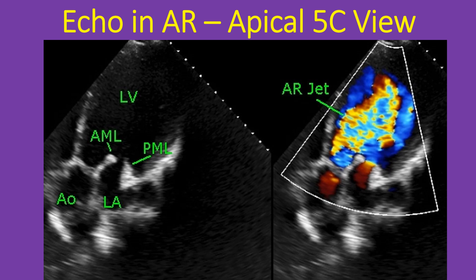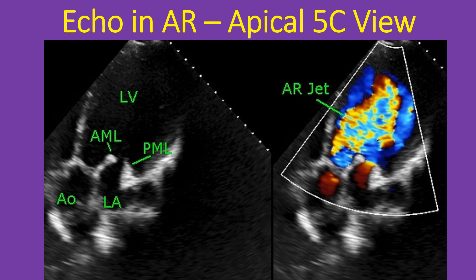Thickening of both aortic and mitral leaflets indicates the possible etiology as rheumatic. Mitral and aortic valves are the most often involved valves in rheumatic heart disease, the former being more common between the two. When there is associated mitral stenosis, the color Doppler jet of mitral flow merges with that of aortic regurgitation in the left ventricle, as both occur in diastole. However, the velocity of the aortic regurgitation jet is much higher than that of mitral stenosis, as the pressure difference between aorta and left ventricle in diastole is much higher than that between left atrium and left ventricle.